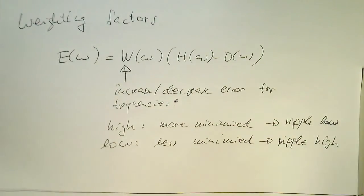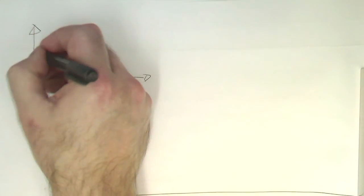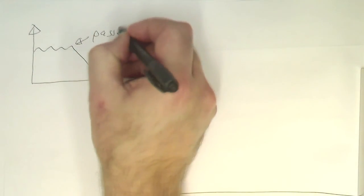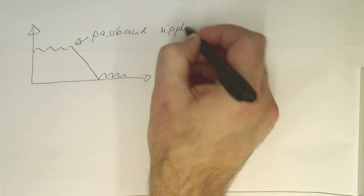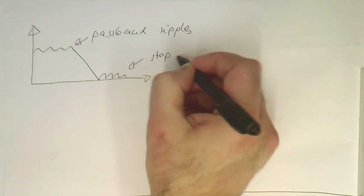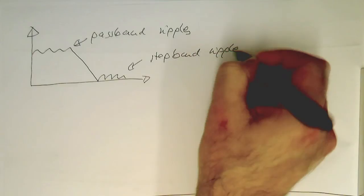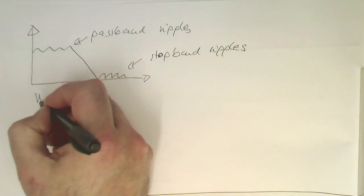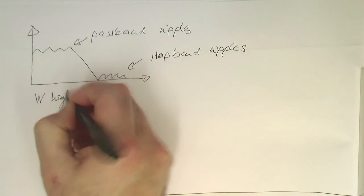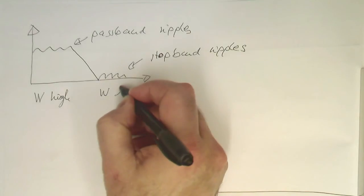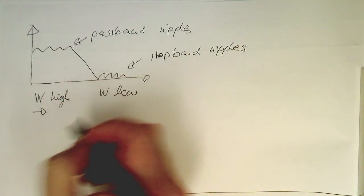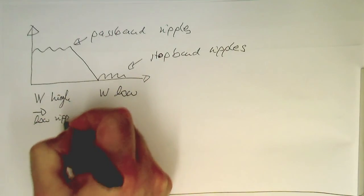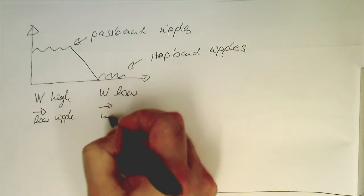We give now an example of that. Remember, we had our frequency response might look like this, where we had pass-band ripples and here we've got stop-band ripples. This means if we have our weight W here high, and this one here, for example, W is low, this means we're getting low ripple here and a rather high ripple here.